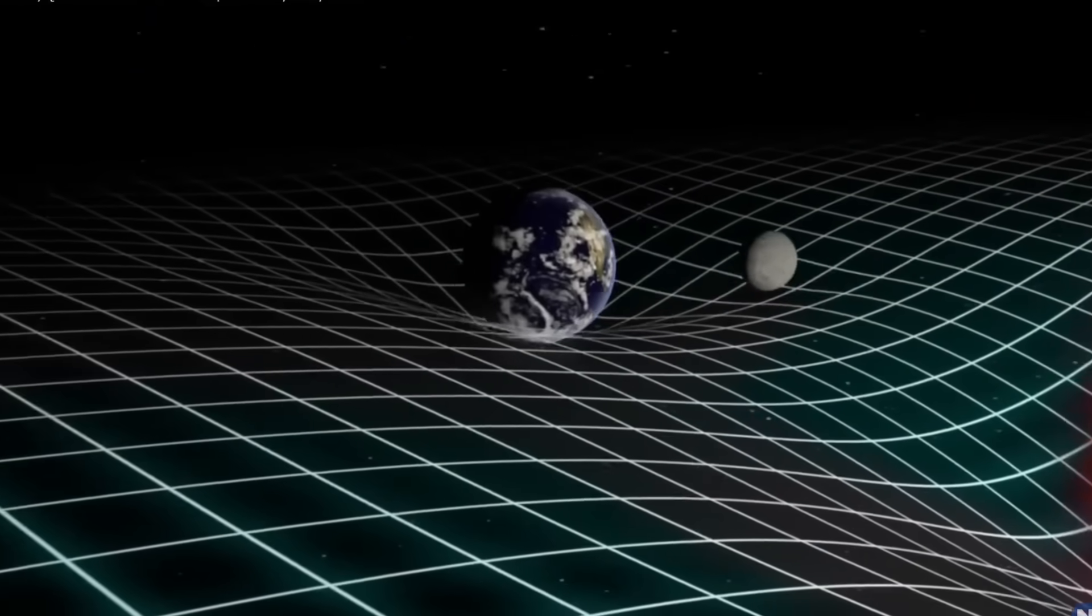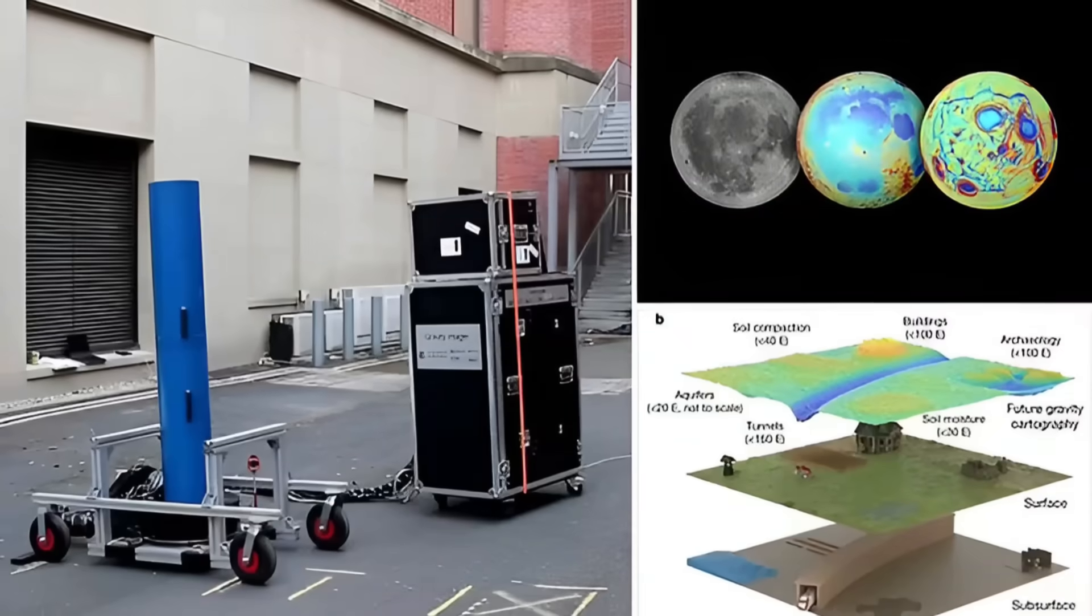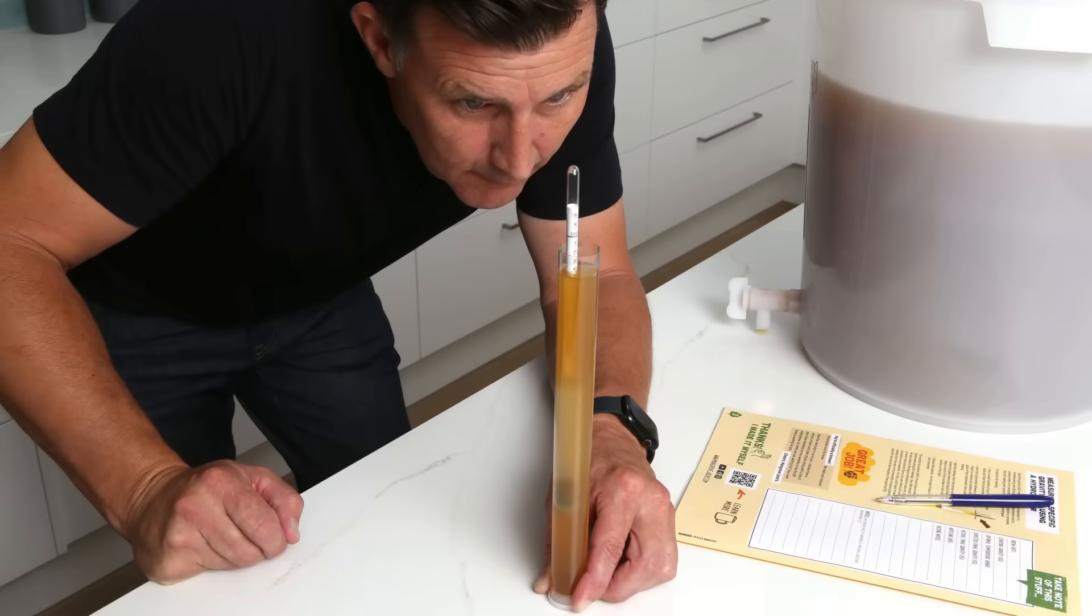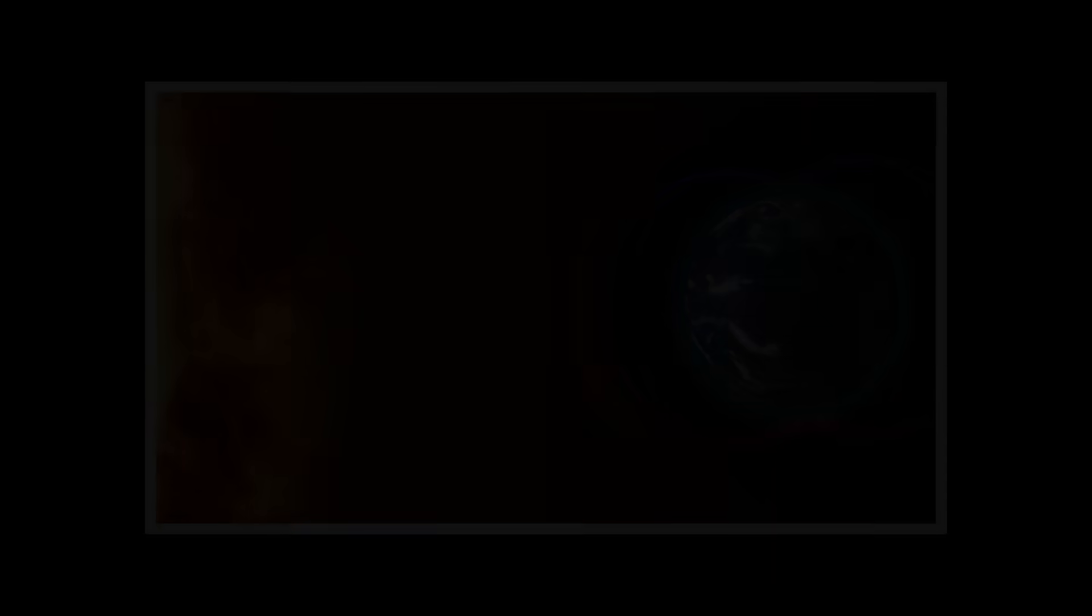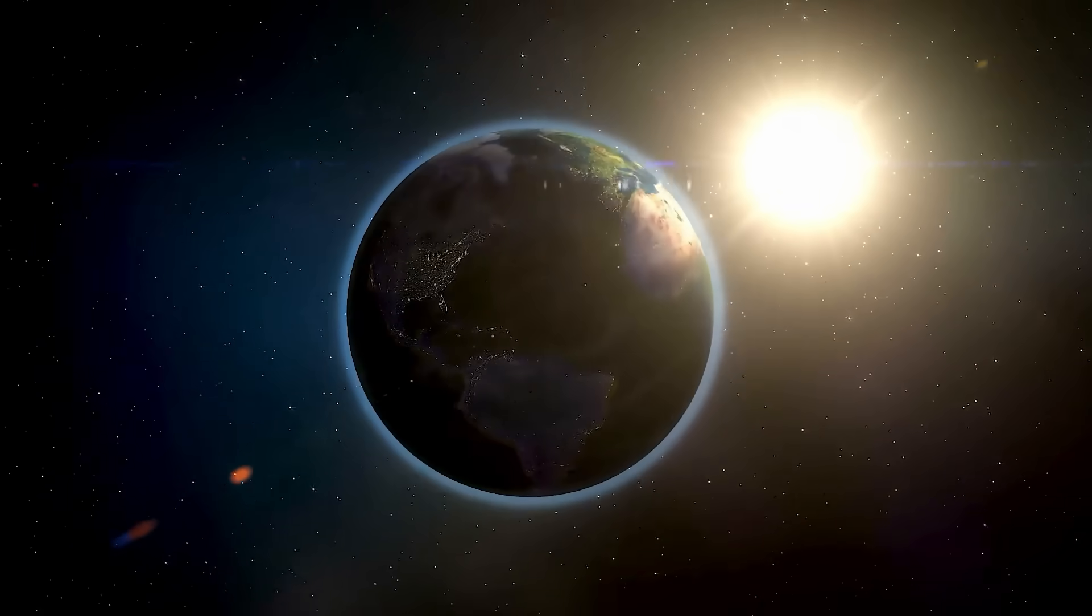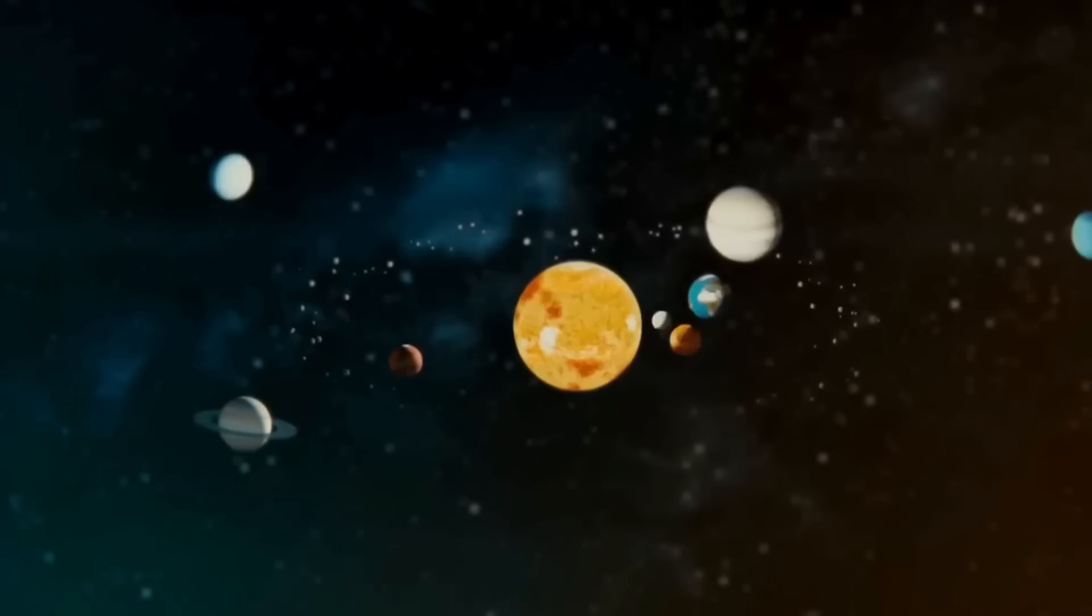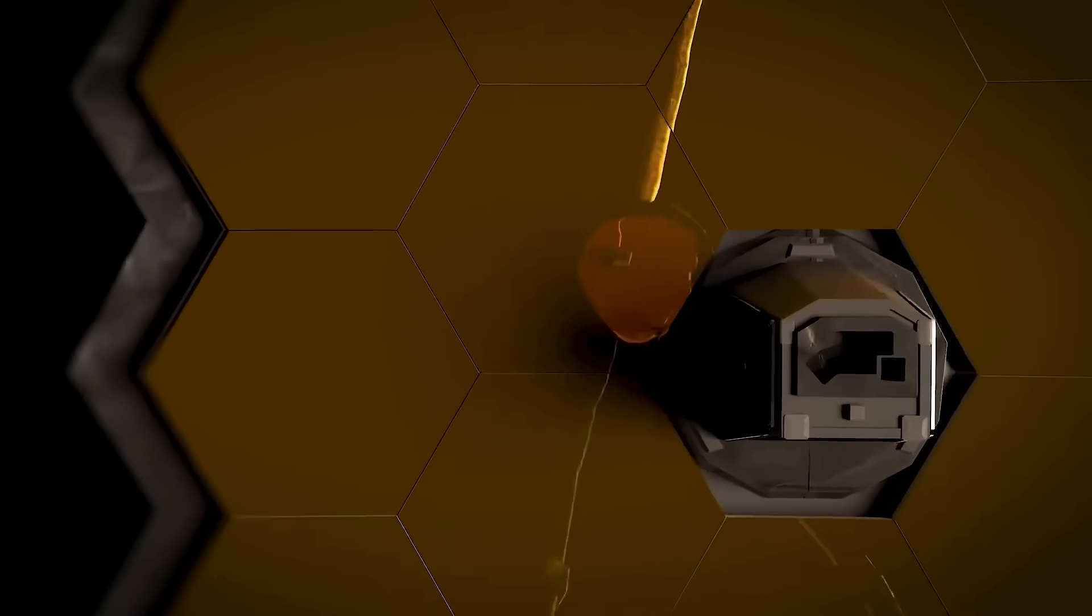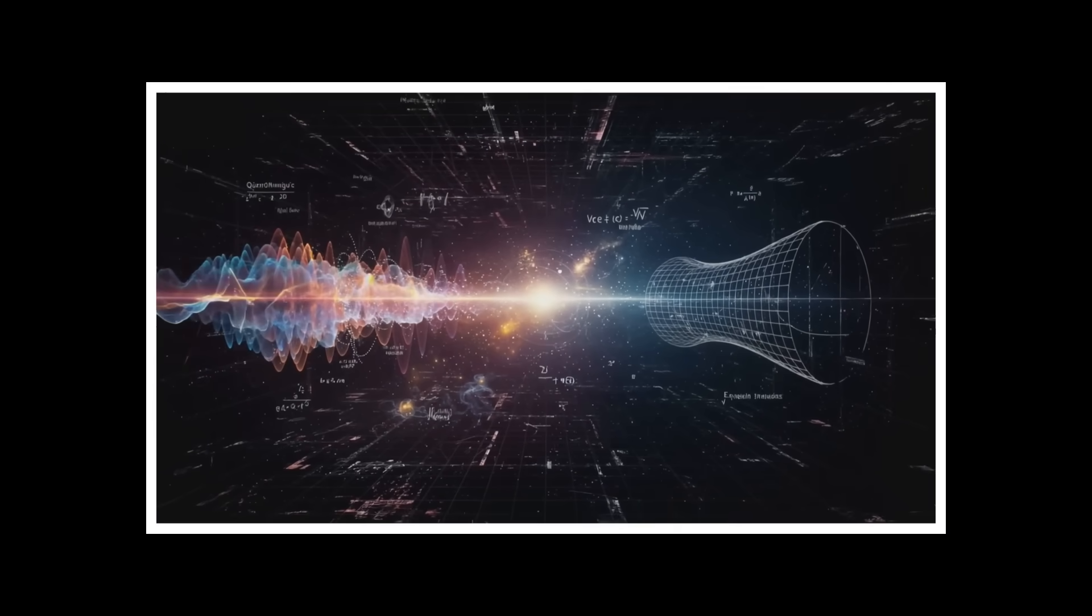Quantum gravity sensors don't rely on radio waves, magnetic fields, or heat signatures, all of which can be blocked or shielded. They detect mass itself, which is virtually impossible to hide. The University of Birmingham's successful field test in 2022 proved these sensors work outside the lab. They mapped hidden tunnels through solid rock with unprecedented precision. Now scale that capability up. A nation with advanced quantum gravity detection could find hidden missile silos, locate underground command centers, or track submarine movements without being detected. That's why both NASA and military agencies are pursuing this technology so aggressively.